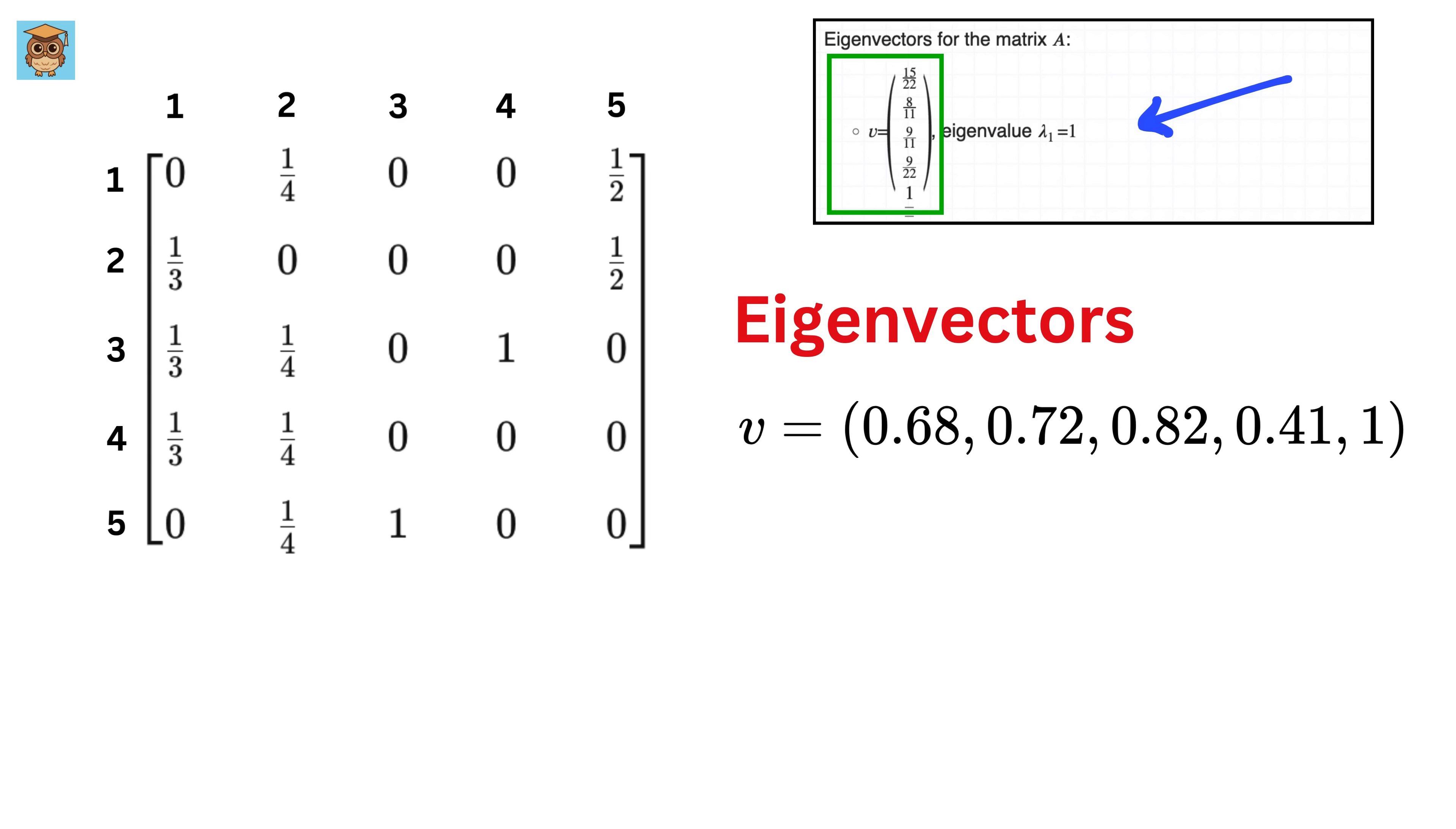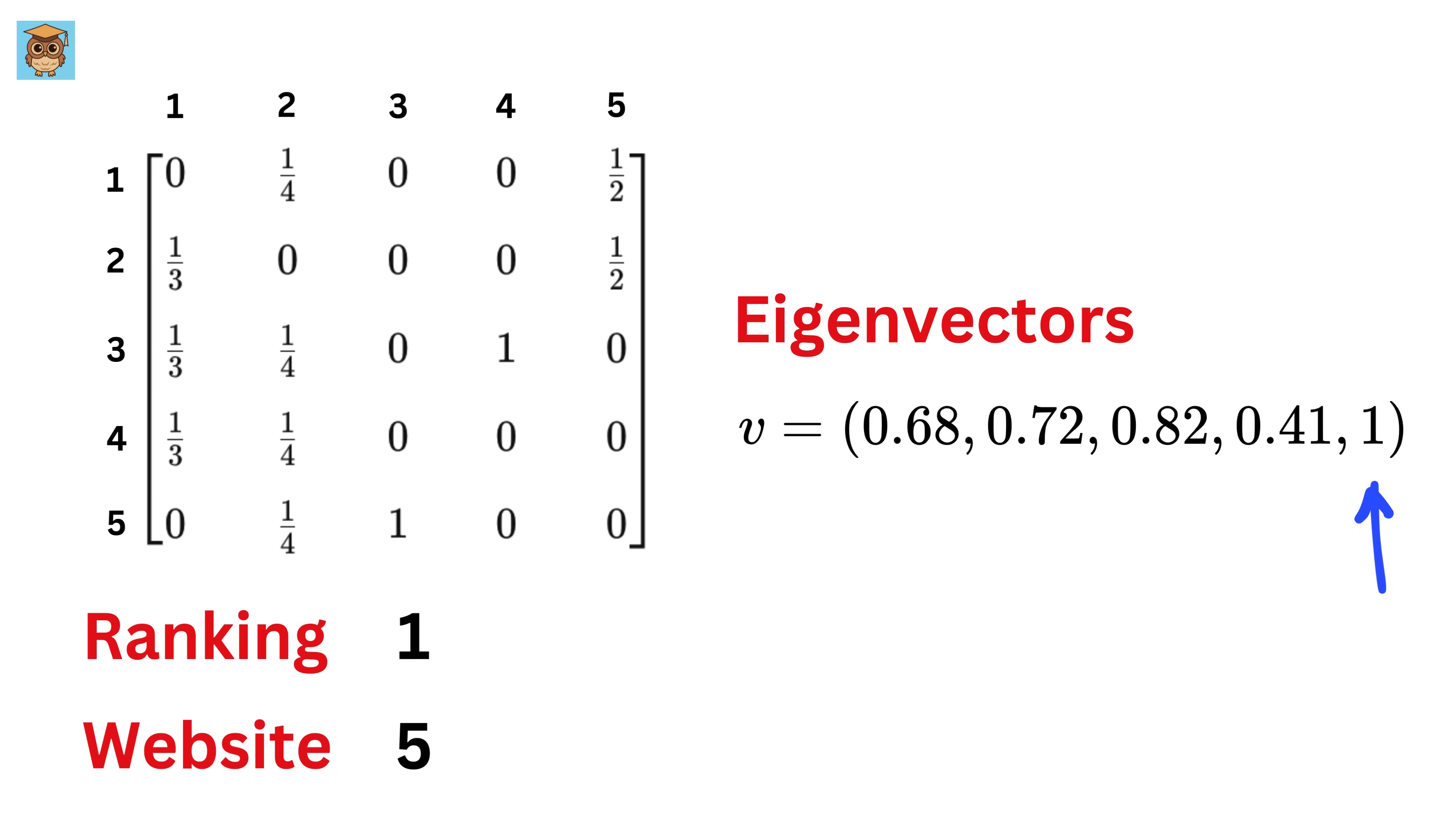The website with the highest value in this eigenvector will be the most important website, meaning it will get the most traffic. The largest value in this eigenvector is one, which is of website 5, and thus it will be ranked 1 by Google.